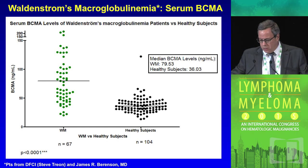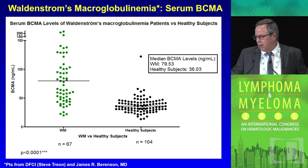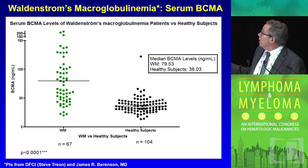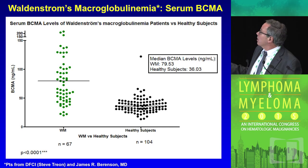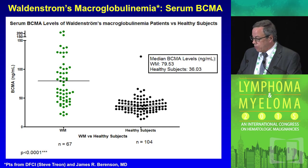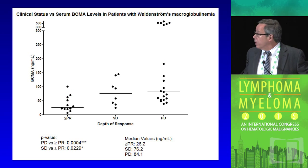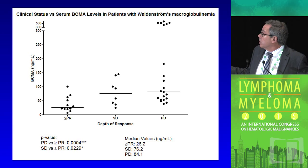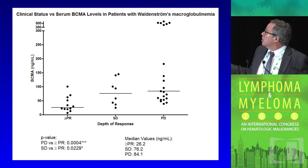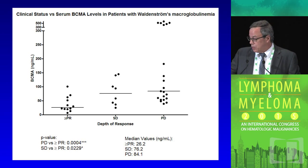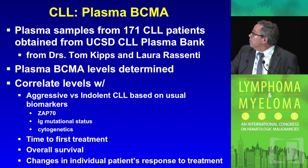We've also looked at other B cell malignancies. In Waldenström's macroglobulinemia, using samples from Steve Treon at Dana-Farber, the median BCMA level is about 80, compared to healthy controls at about 36 — a highly significant difference. It also correlates with clinical status: patients in at least a partial response have significantly lower levels than those with stable or progressive disease, though we are still generating more data.